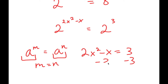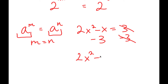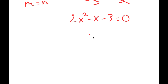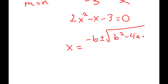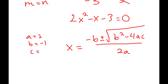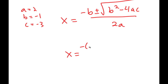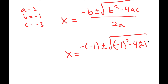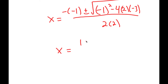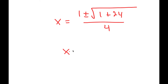And if I subtract 3 on both sides, I get 2x squared minus x minus 3 is equal to 0. So now to solve this, I'm going to use the quadratic formula, which is negative b plus or minus the square root of b squared minus 4ac all over 2a. In this case, a is 2, b is negative 1, and c is negative 3. So I get x is equal to negative of negative 1 plus or minus the square root of negative 1 squared minus 4 times 2 times negative 3, all over 2 times 2. This is equal to 1 plus or minus the square root of 1 plus 24 over 4, which is equal to 1 plus or minus 5 over 4.